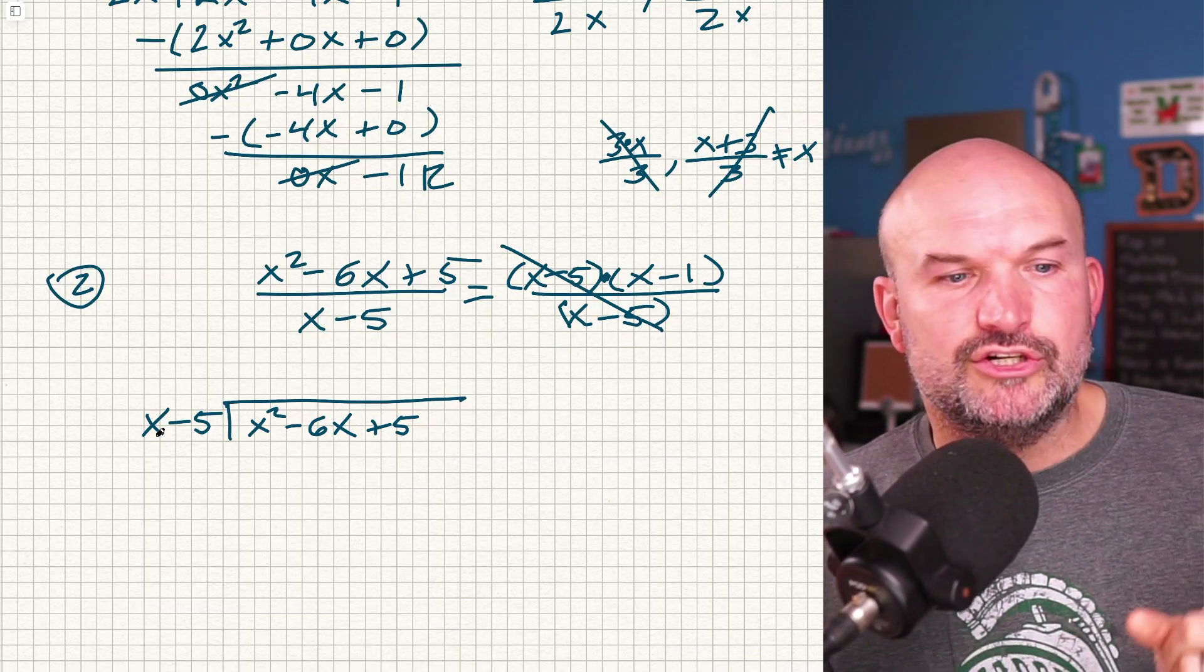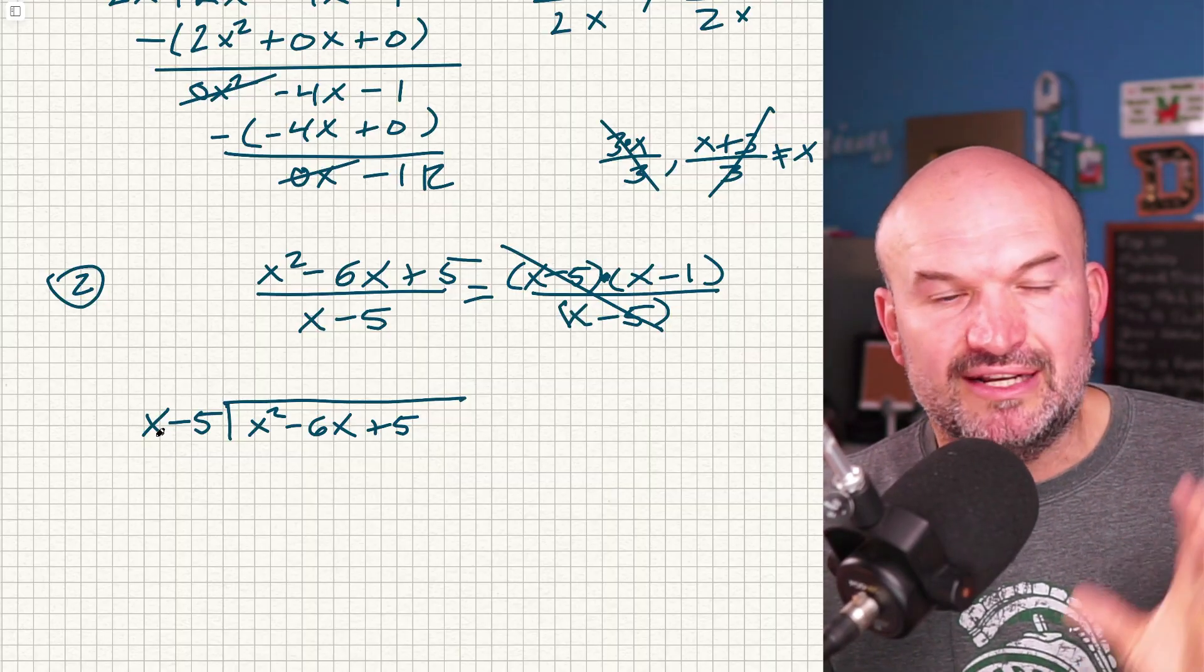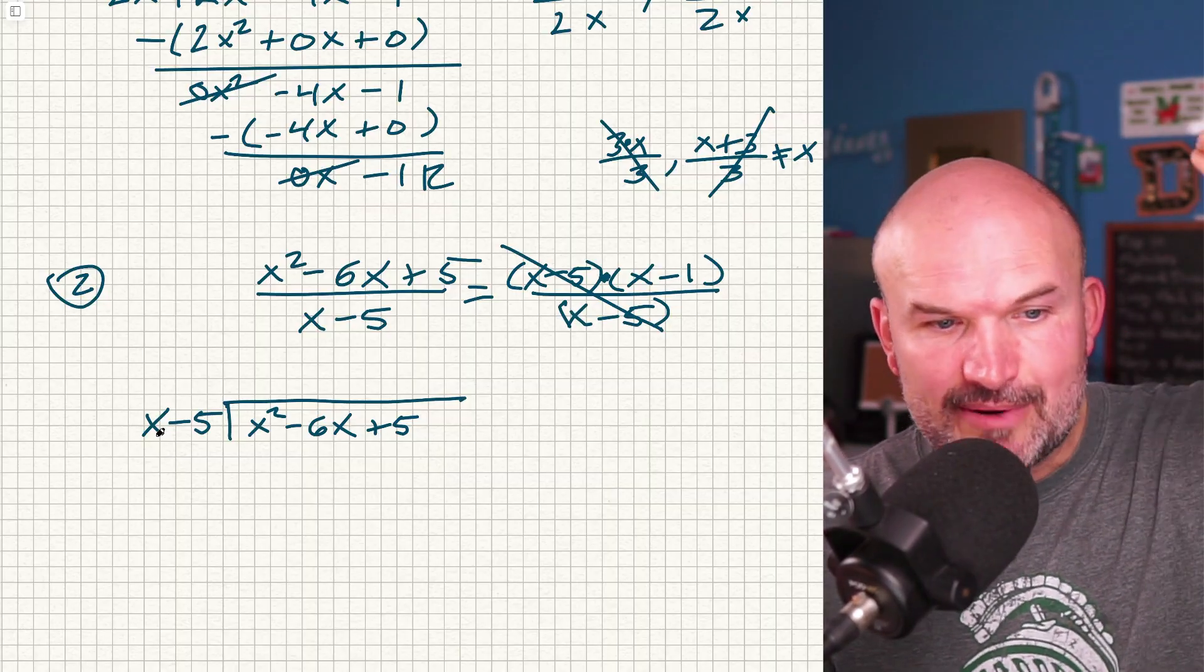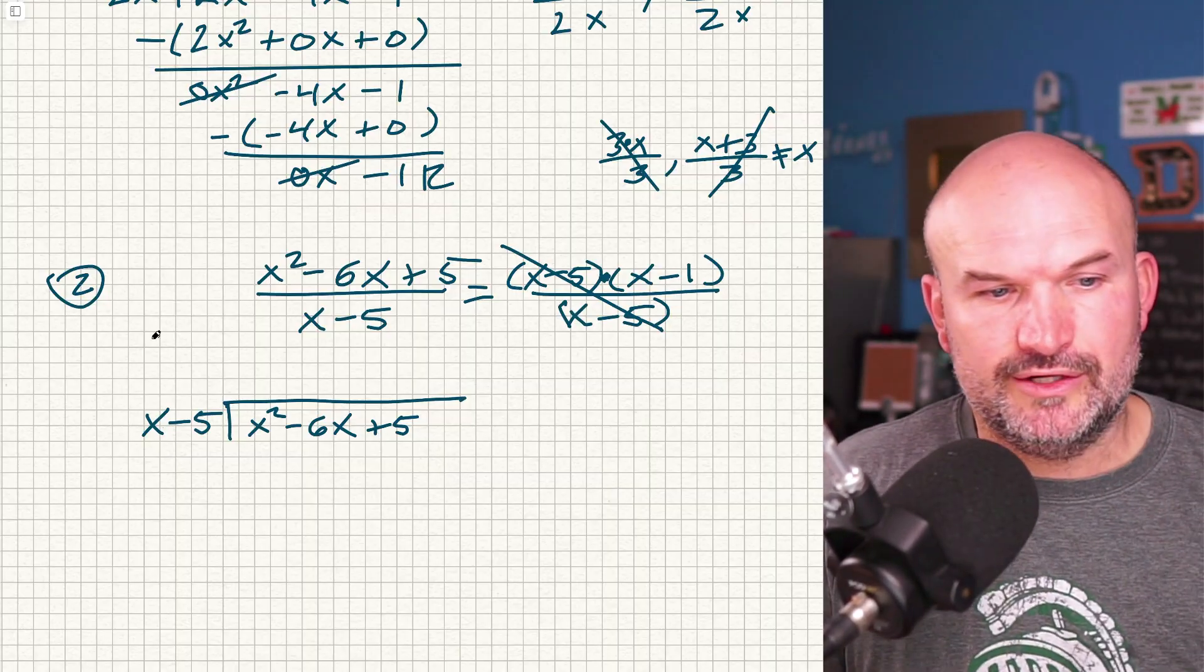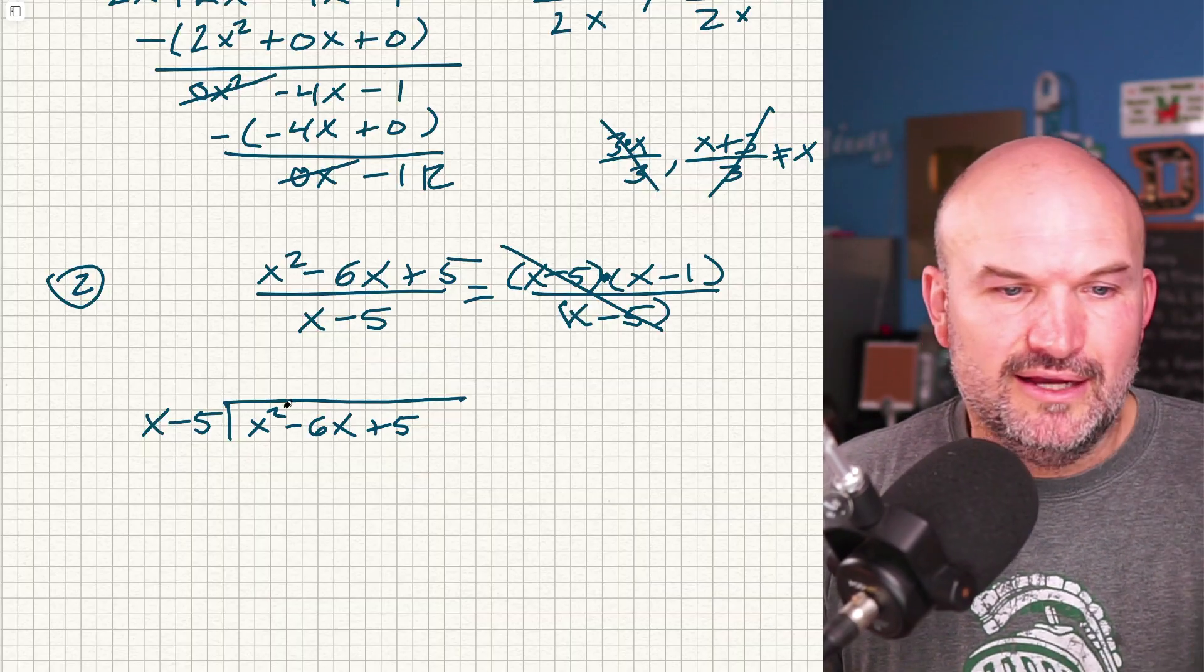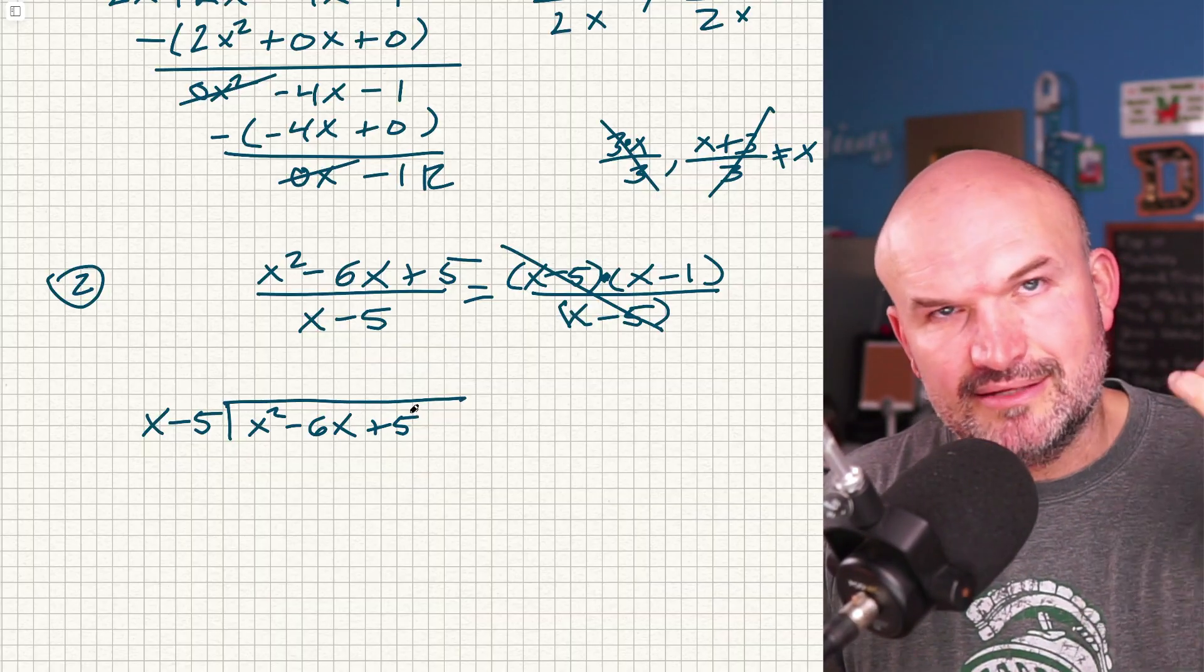So a couple points. Make sure you always have your divisor and your dividend in descending order. That means you have the highest power first going down in descending order. And you can see I have x to the first, then my constant, x squared, x to the first, and then my constant. So we're good to go.